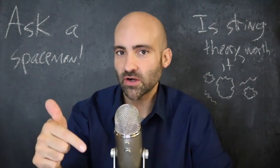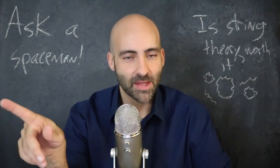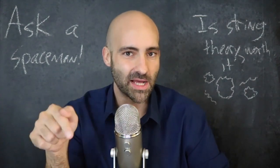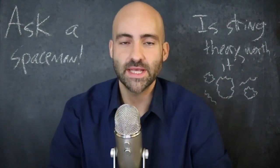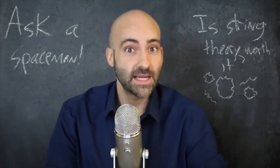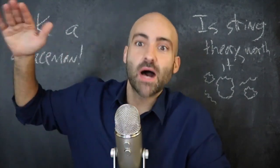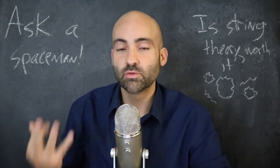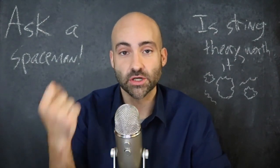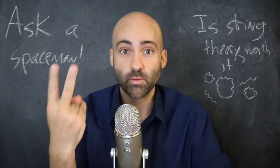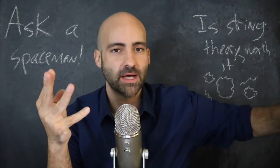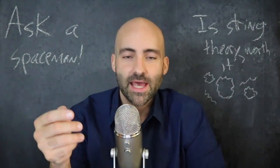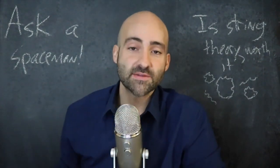We're going to start not with string theory but with something we call the standard model of particle physics. The standard model is the only model we have of three of the forces of nature: electromagnetism, weak nuclear, and strong nuclear. Gravity we'll talk about next week — just pretend these are the only three.